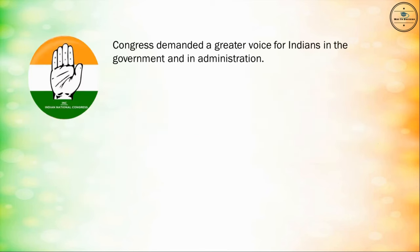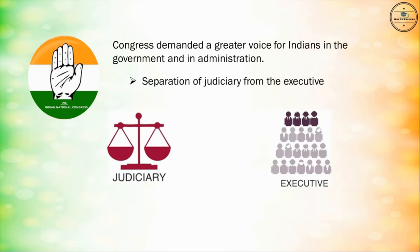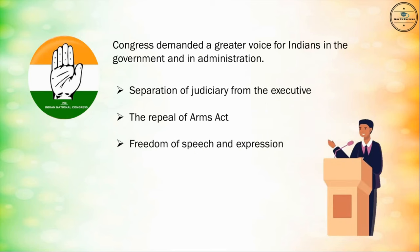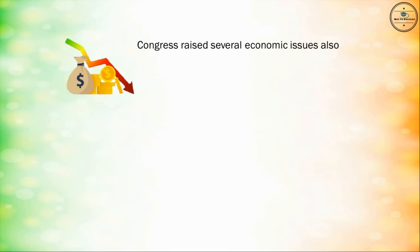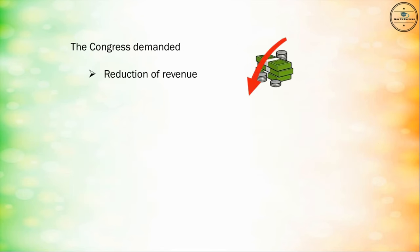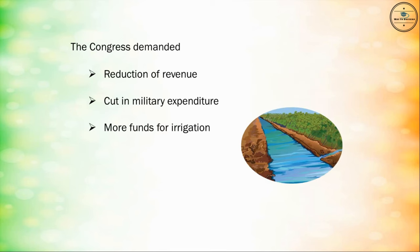Under the section 'A Nation in the Making,' the Congress demanded a greater voice for Indians in the government and in administration. It also demanded the separation of the judiciary from the executive, the repeal of the Arms Act, and freedom of speech and expression. Congress also raised economic issues — an increase in land revenue had impoverished peasants and zamindars. So the Congress demanded reduction of revenue, cut in military expenditure, and more funds for irrigation.